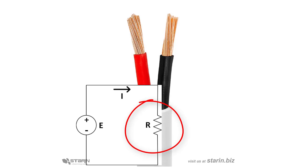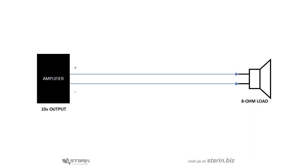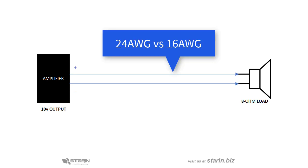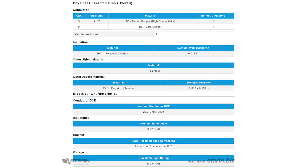As an example, let's say we're running 100 feet of speaker cable connected to an amplifier with a 10 volt output. We have an 8 ohm speaker impedance, so we'll compare the differences between a 24 gauge and a 16 gauge cable.